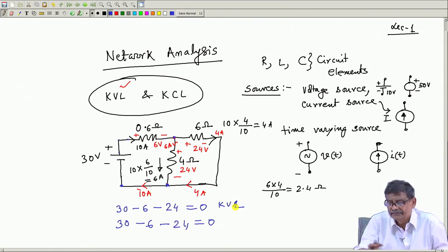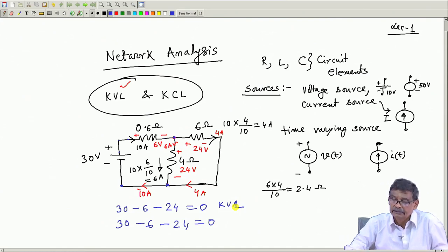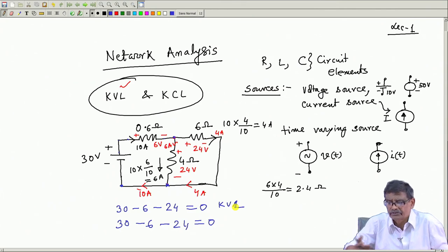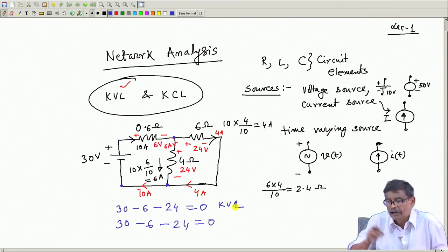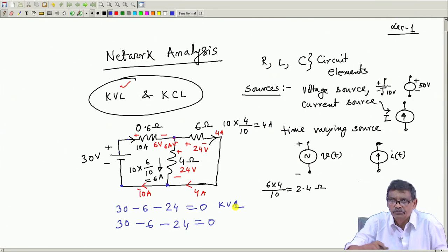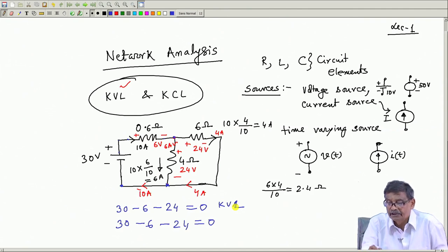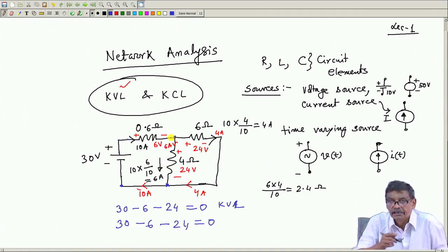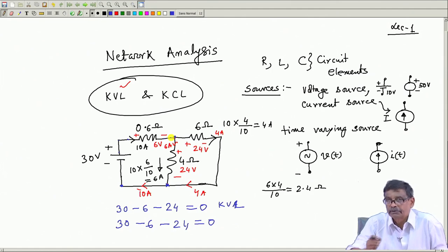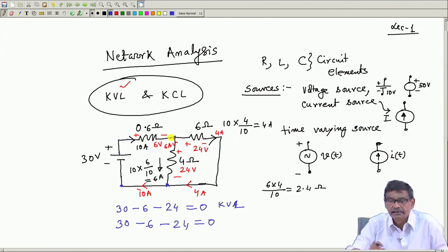In nutshell, KVL and KCL state that: however complex the circuit is, it will consist of several closed paths, and the voltage drops across all elements including sources will add up to zero. Similarly, at whatever junction you take, the current coming in equals the current leaving. Knowing this, any circuit can be solved.